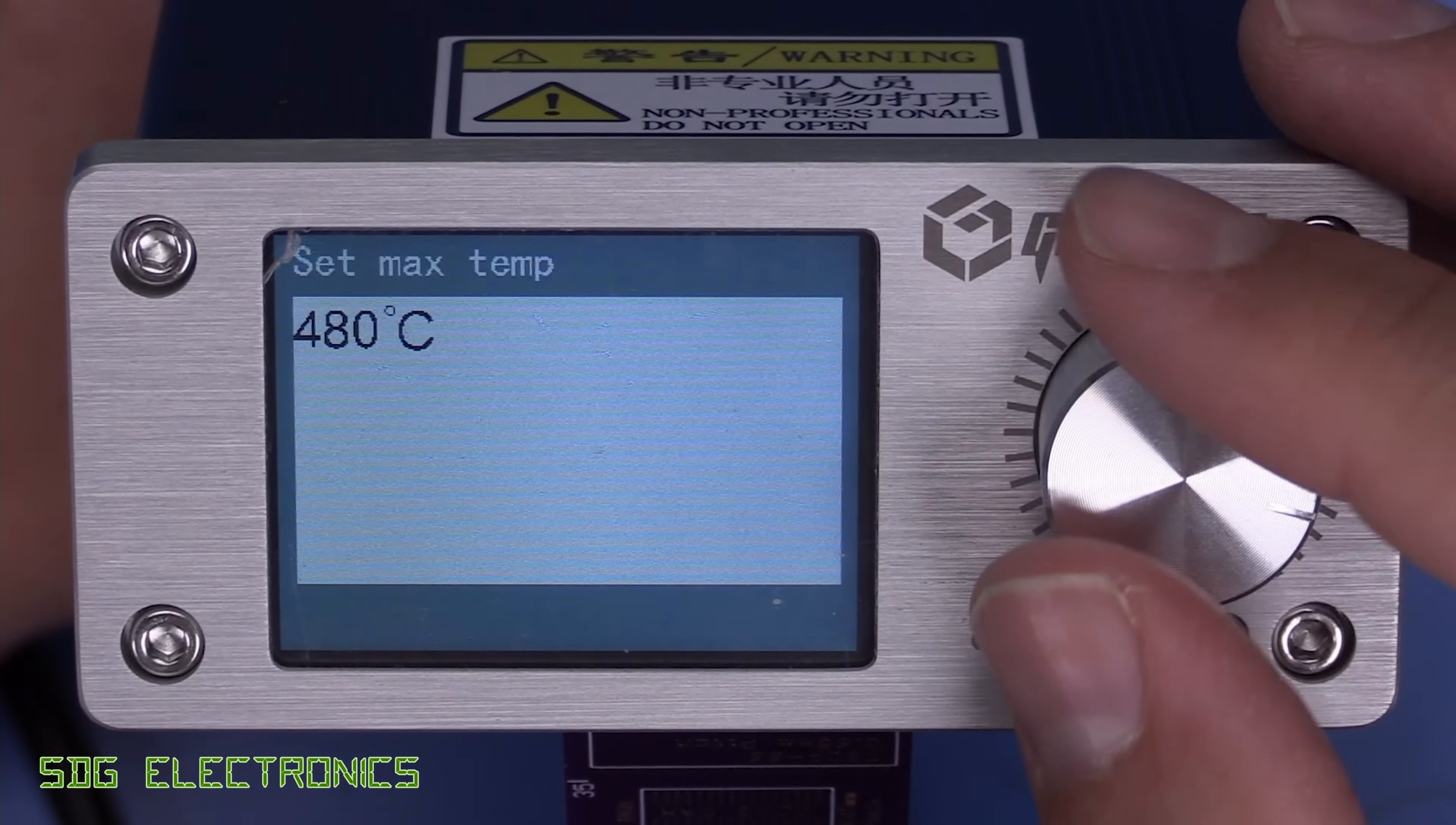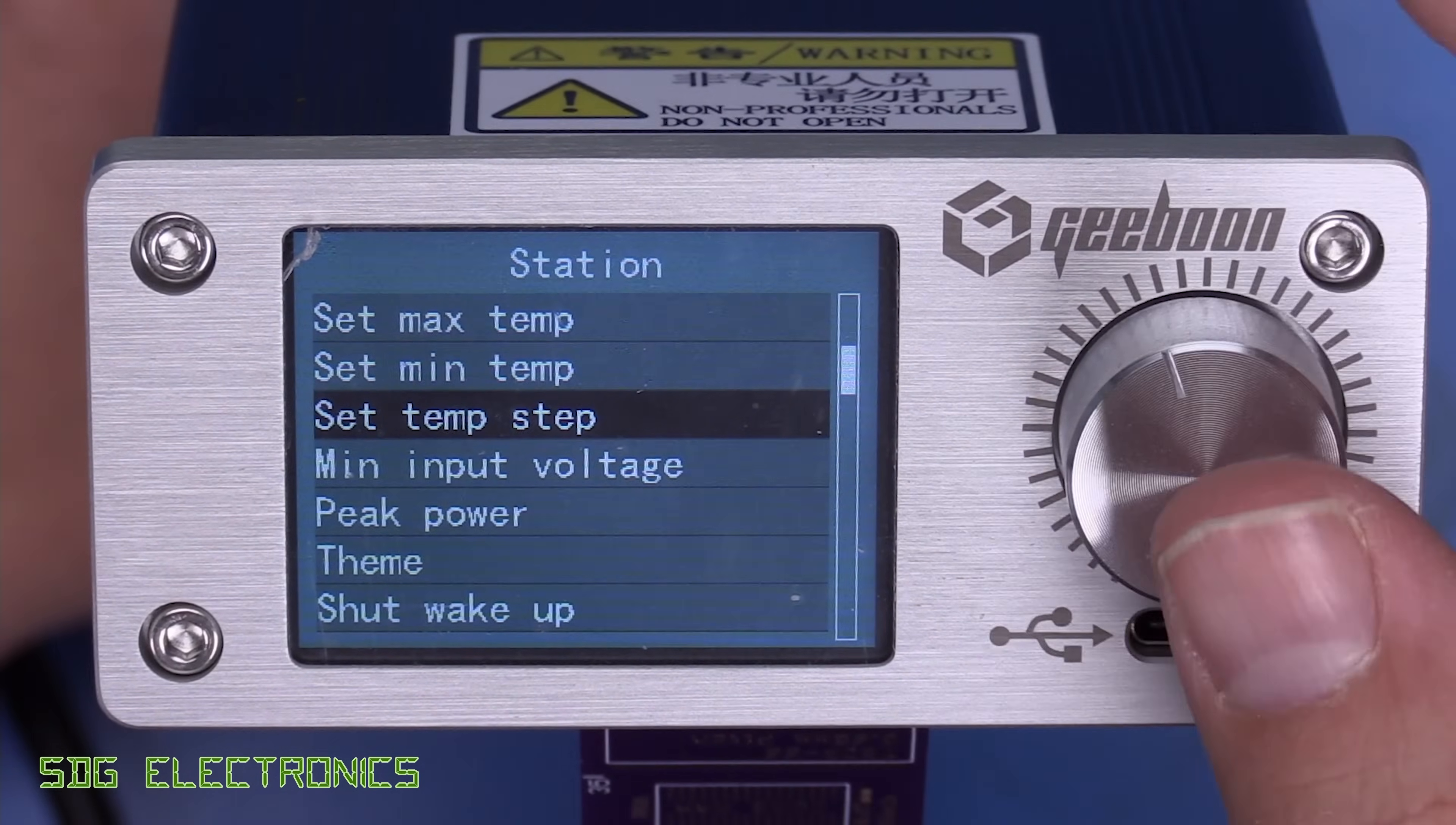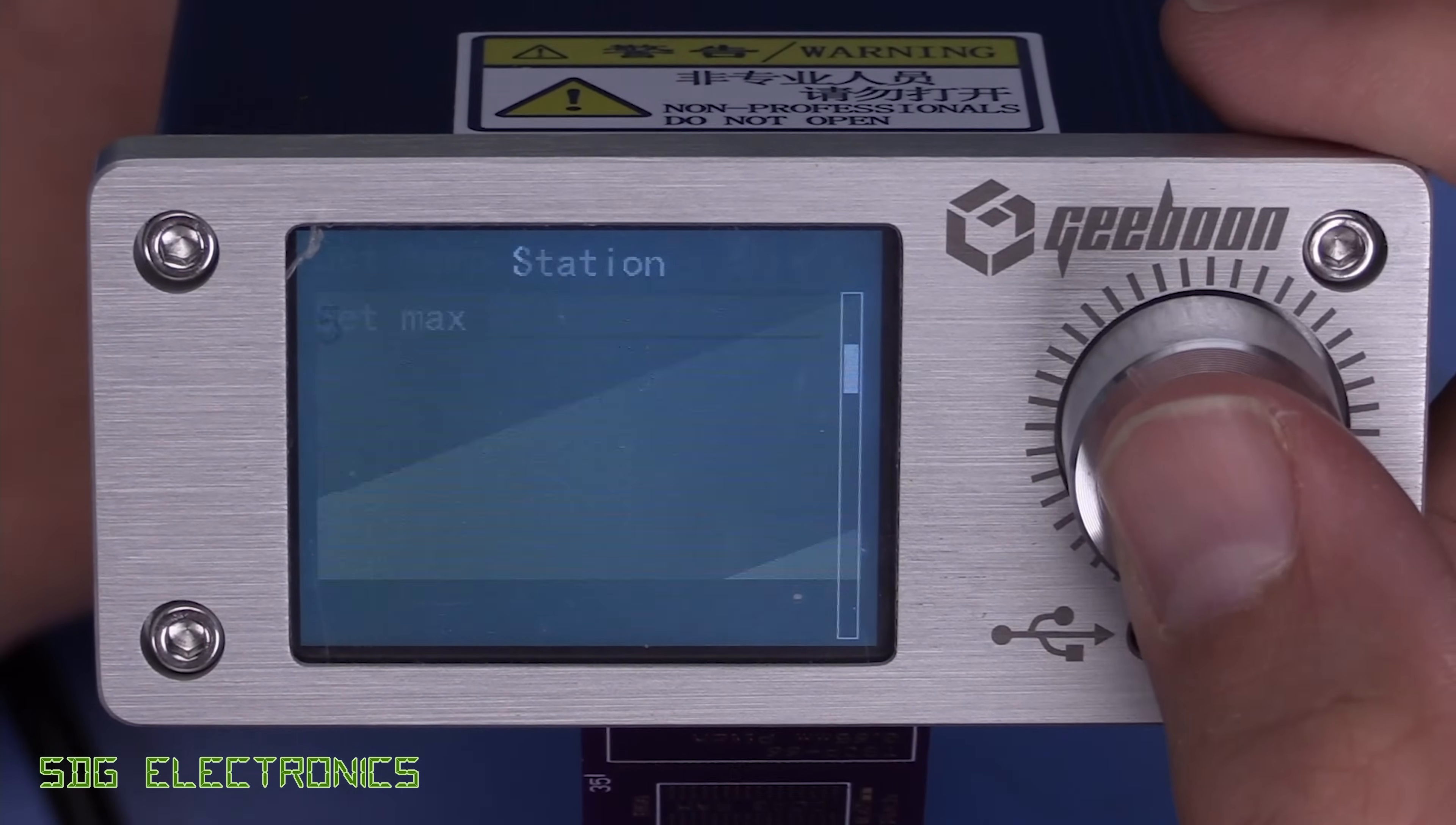But the station actually supports going up to 480 degrees C. However, most of the time you'll never need temperatures above 420. Same with the minimum temperature. And then we've got the step size. So when you turn the rotary encoder, how quickly the temperature adjusts. This one's currently set to five degree steps. But you can change this to whatever you like.